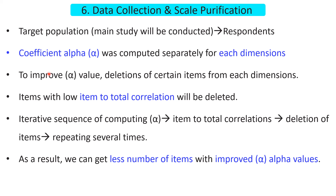The sixth and last step is data collection and scale purification. We collect data from the target population and compute the coefficient alpha separately for each dimension. If we get a low coefficient alpha value, we have to delete certain items from each dimension to improve that alpha value.